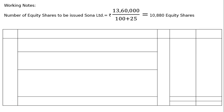Working notes — number of equity shares to be issued: 13 lakh 60,000, because this is 17 lakhs minus 25 percent of 17 lakhs, which is 3 lakh 40,000. Hence 17 lakhs minus 3 lakh 40,000 equals 13 lakh 60,000, divided by 100 plus 25 (that is ₹100 face value plus ₹25 premium), giving 10,800 equity shares to be issued.